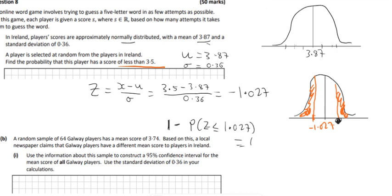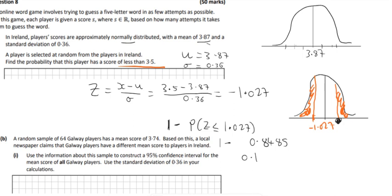We get 0.8485 from the tables, and then we do 1 minus that. Putting it in the calculator gives 0.15149 — wait, so the result is 0.91515. That's the probability.